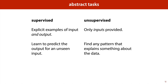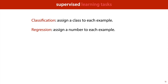The first thing we can do is divide the abstract tasks into supervised and unsupervised ones. Supervised tasks are those where explicit examples of both input and output are provided — for instance, a picture of a digit and which digit it's supposed to be — and then the task is, given an input, to learn to predict the output. In unsupervised tasks we are provided only with inputs and the task is to find any pattern that explains something about the data. There are two main supervised tasks called classification and regression: in classification we assign a class to each example from a small number of categories, such as the 10 digits; in regression the task is to assign a number to each example.